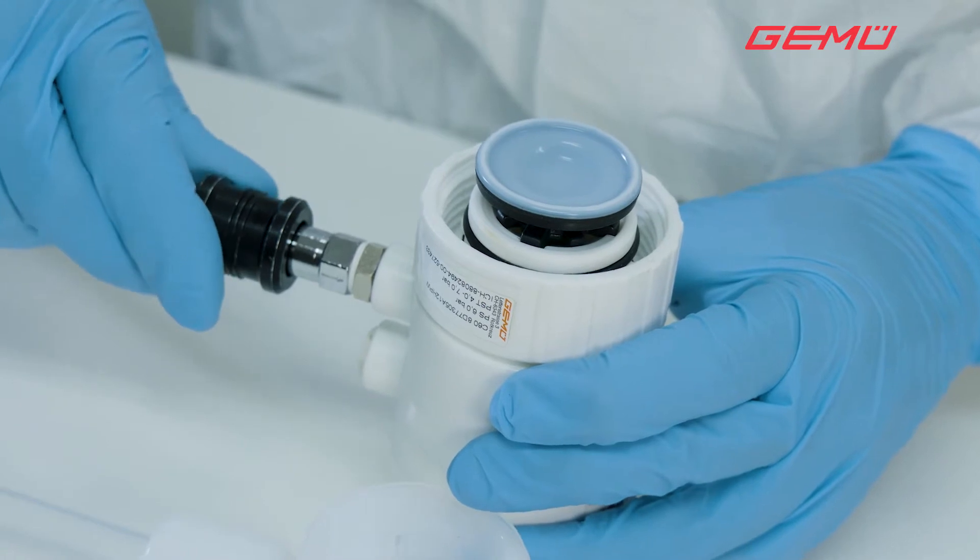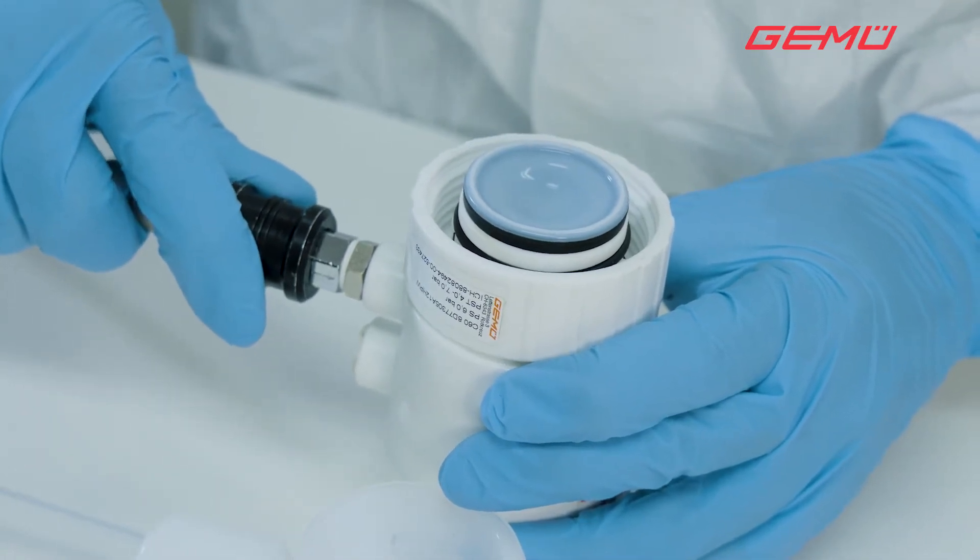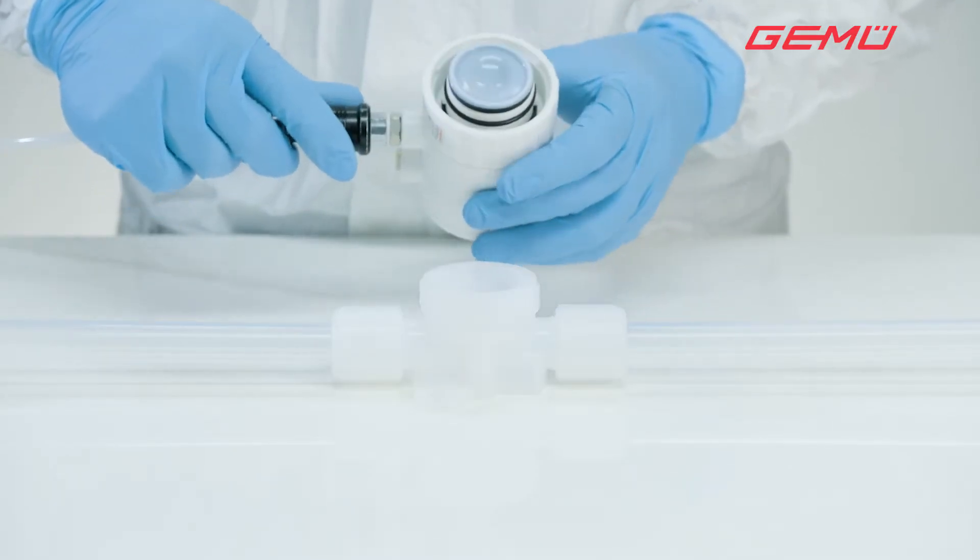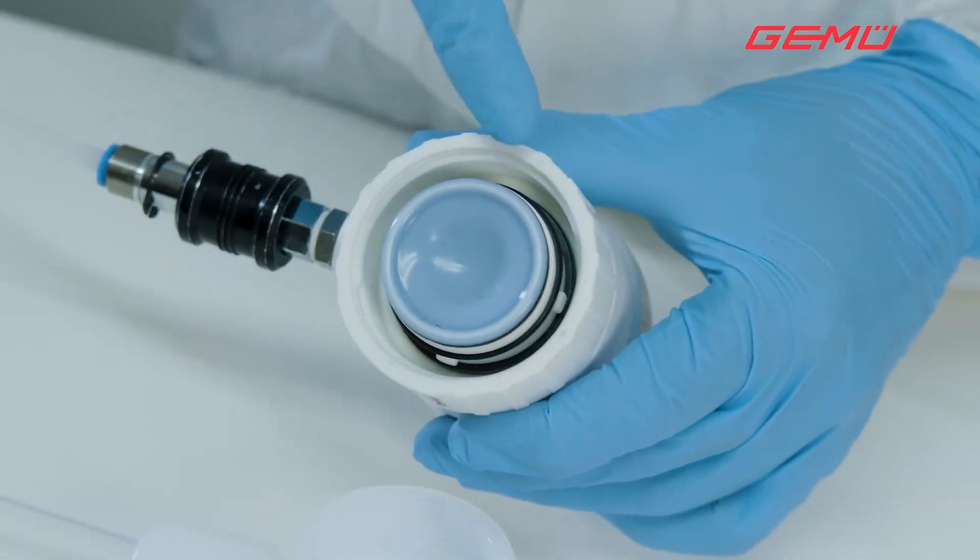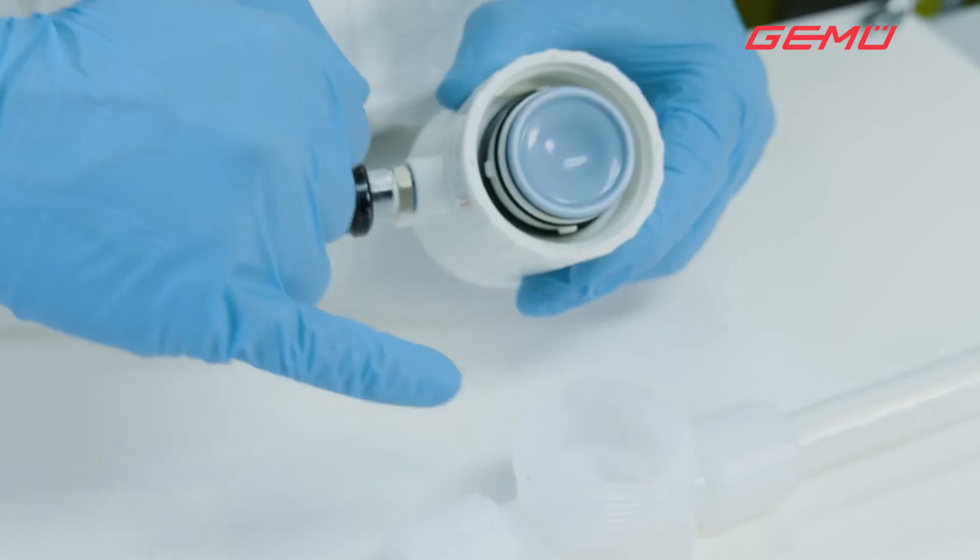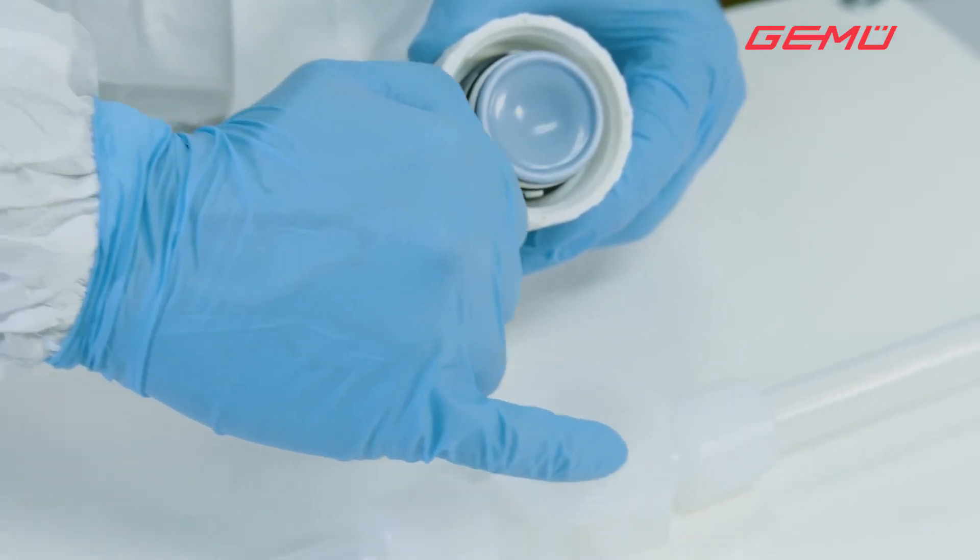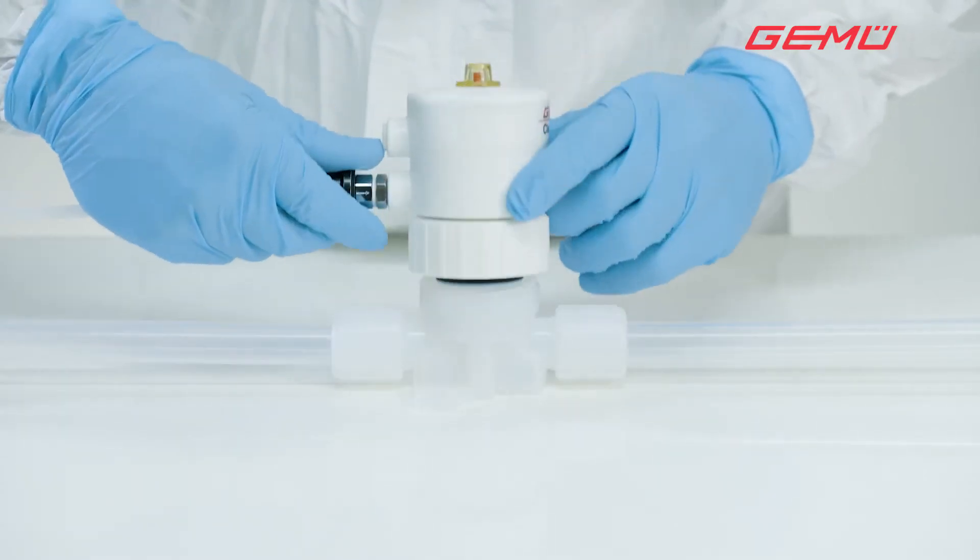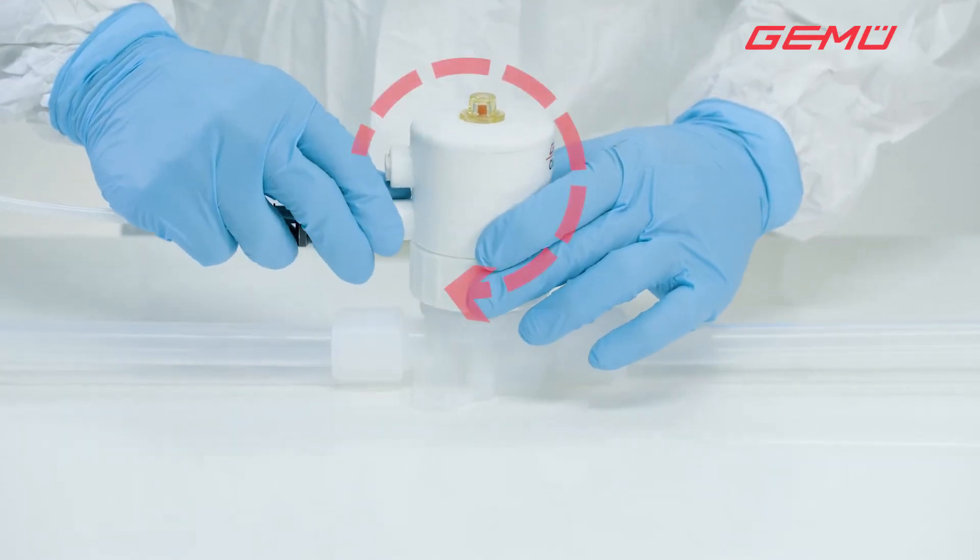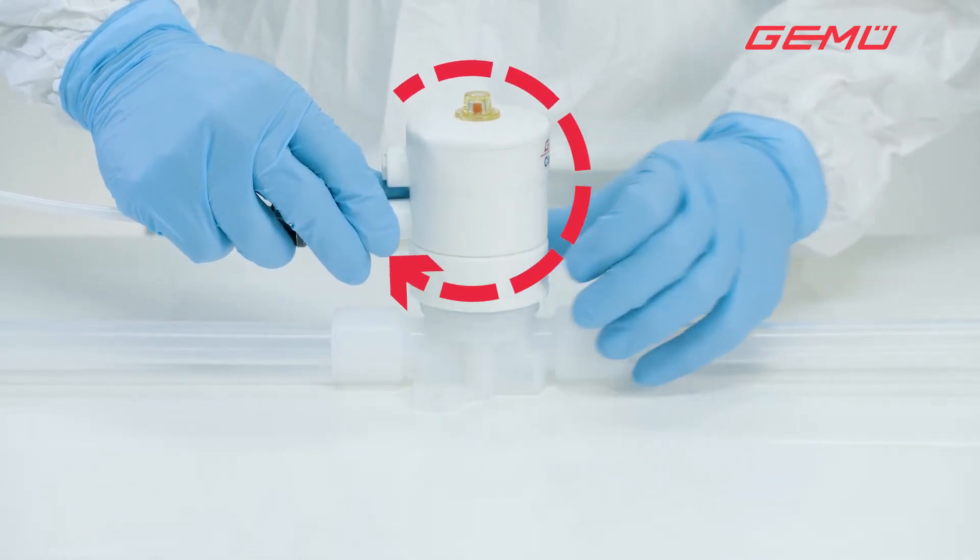Move the actuator to the open position. The fixing lugs in the actuator and the fixing grooves in the valve body indicate the correct installation position. Position the actuator on the body and tighten the central nut clockwise until it is hand tight.